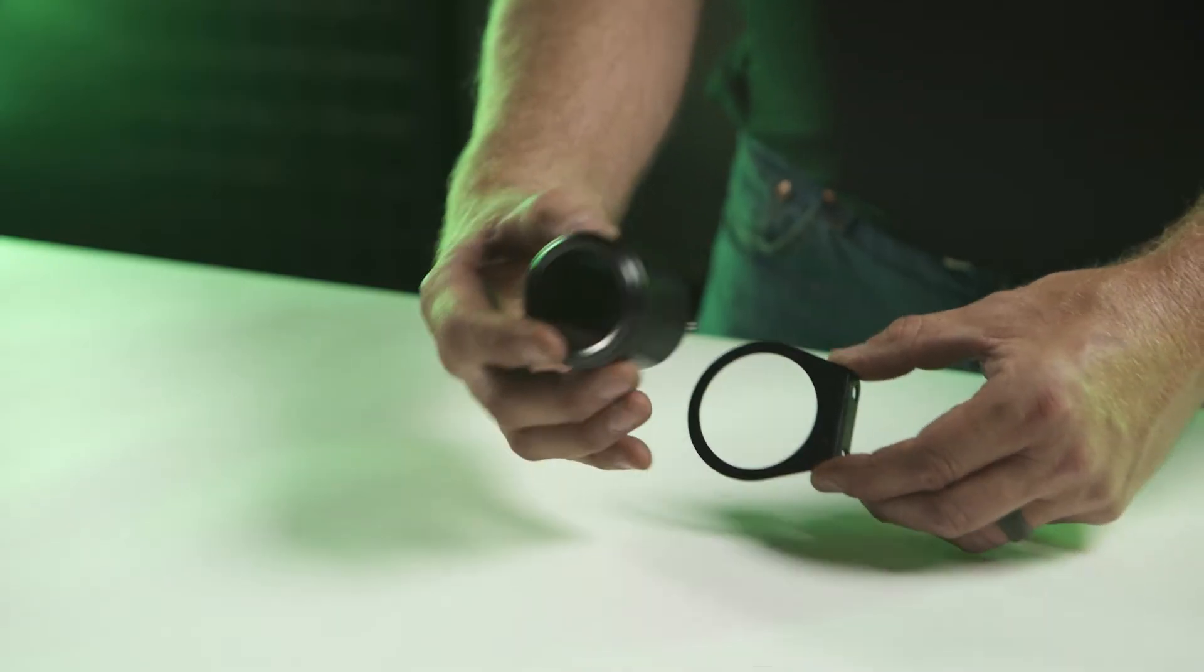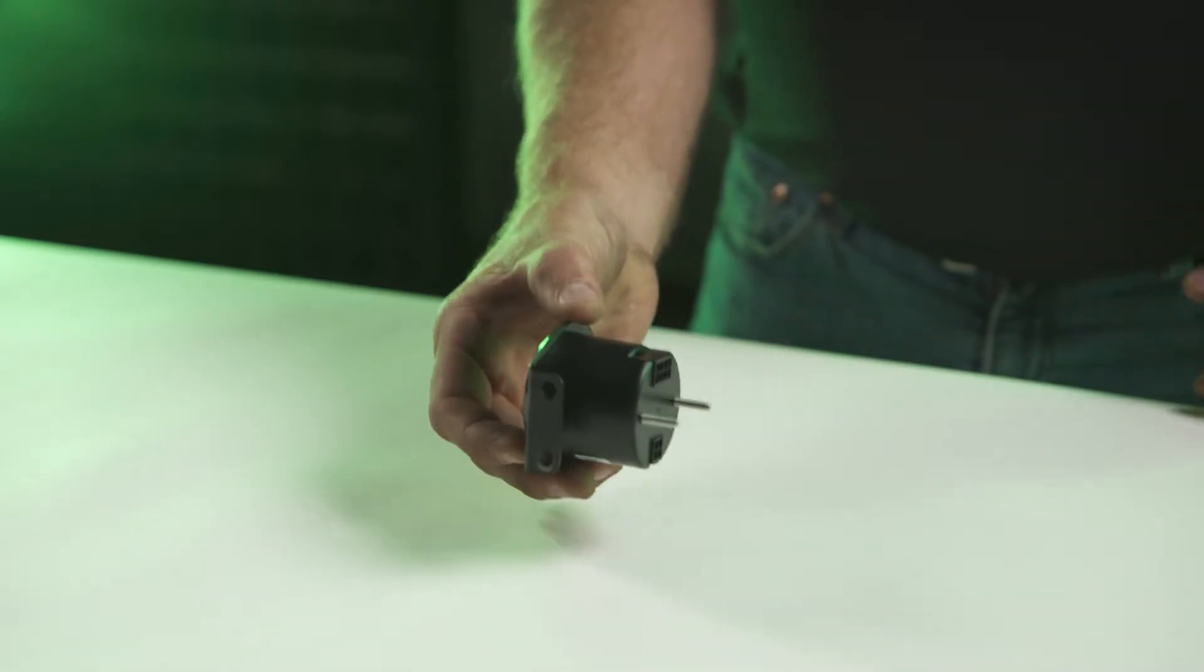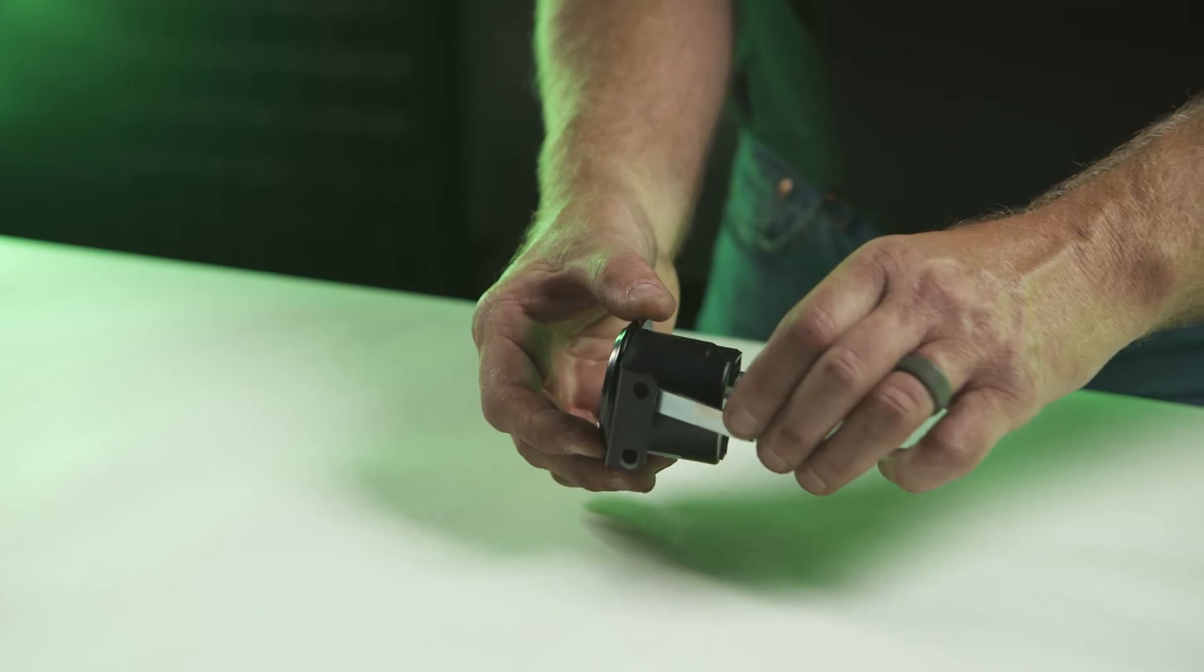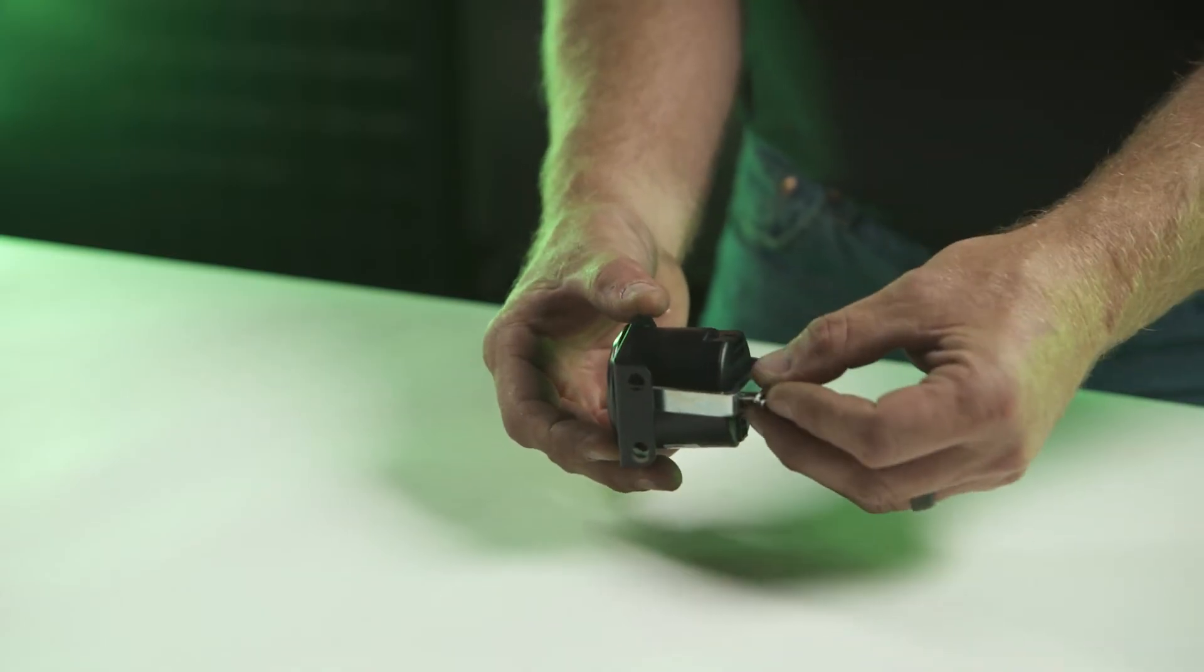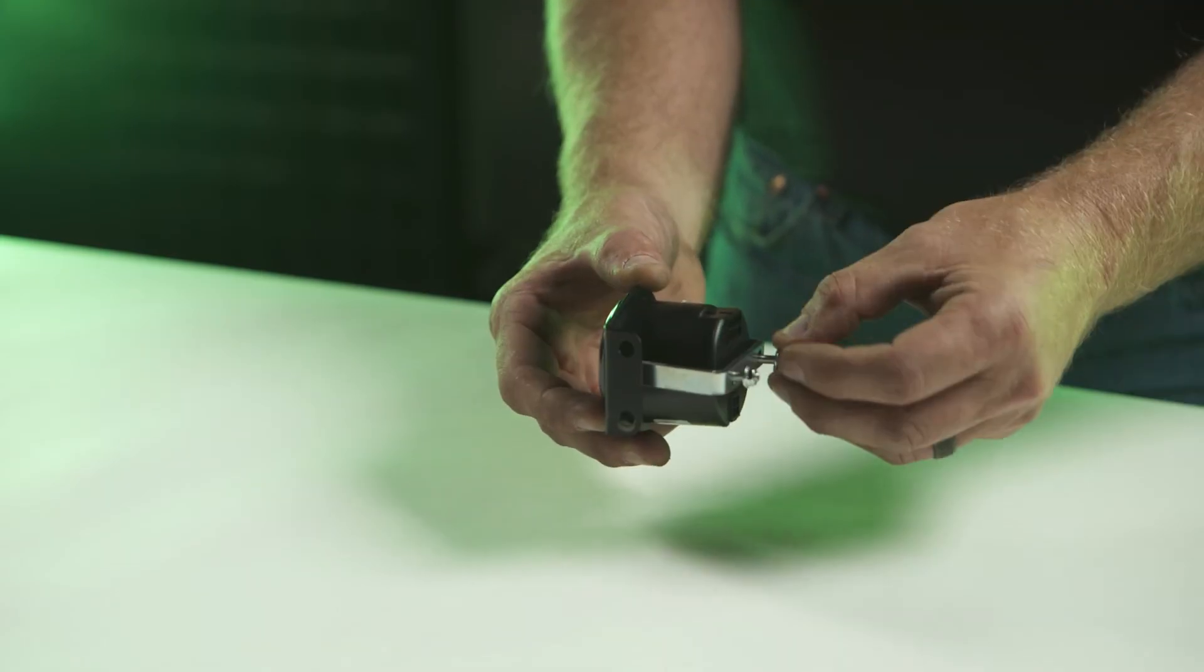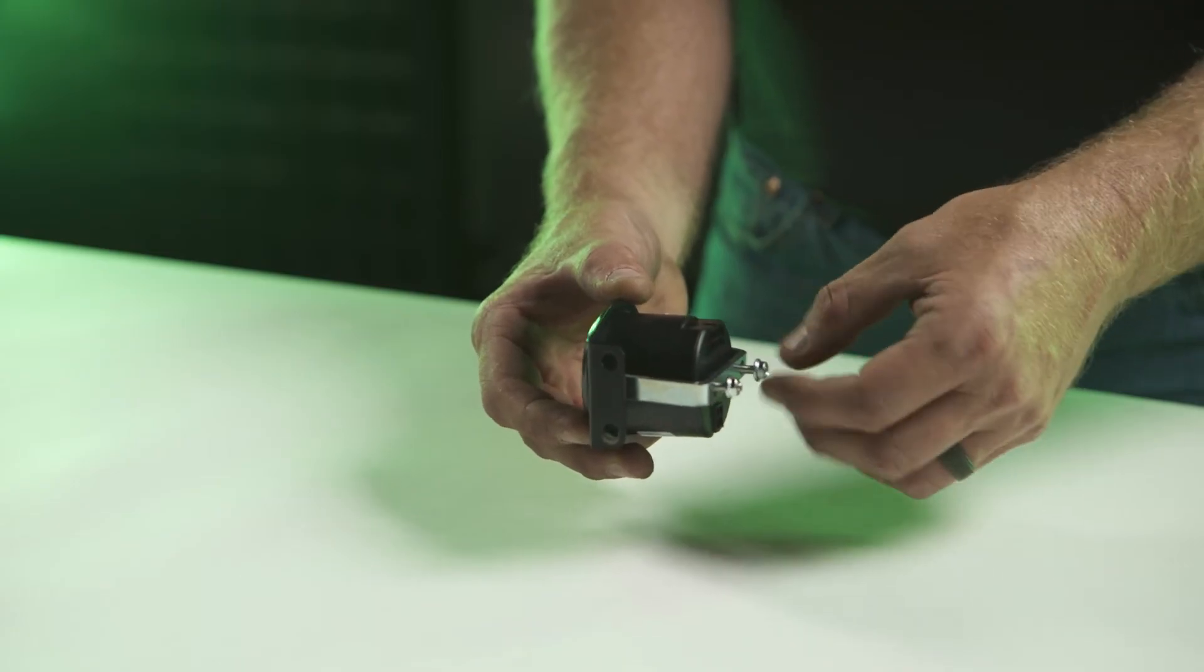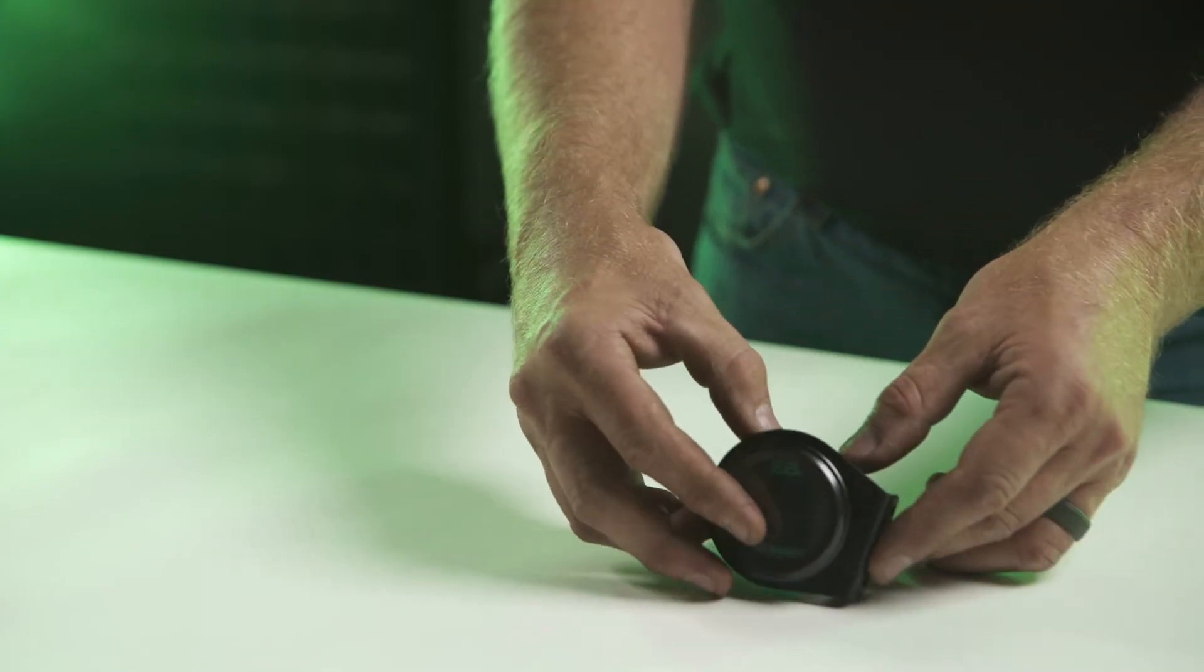Method two, optional mounting bracket. Find a suitable location for the LCD battery meter. Before cutting any holes, ensure that you can route the meter cable to this location and that there is sufficient clearance behind the meter.